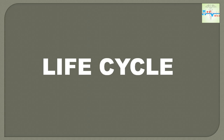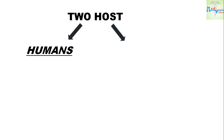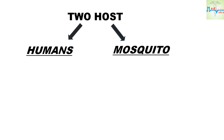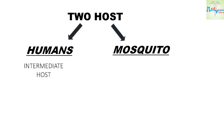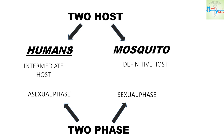The life cycle of the malarial parasite takes place in two hosts: humans and the female Anopheles mosquito. The humans are the intermediate host and the mosquitoes are the definitive host. Since there are two hosts, there will be two phases in the life cycle.